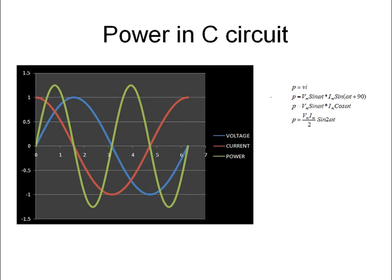Power in the capacitive circuit equals voltage times current: Vm sin omega t into Im sin(omega t + 90°). Since sin(omega t + 90°) equals cos omega t, this becomes Vm sin omega t into Im cos omega t. Using the identity sin 2θ equals 2 sin θ cos θ, we get sin θ cos θ equals sin 2θ by 2. Therefore P equals (Vm times Im by 2) times sin 2 omega t.